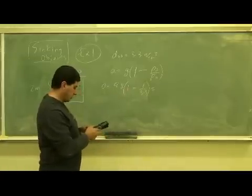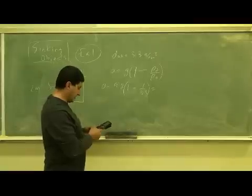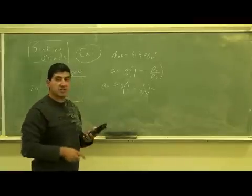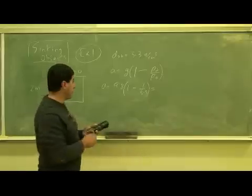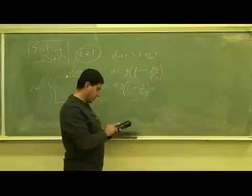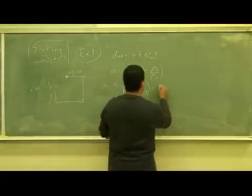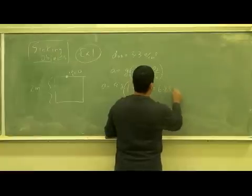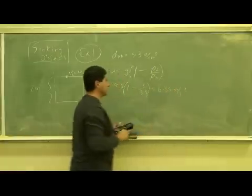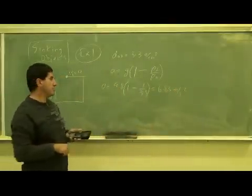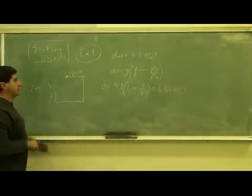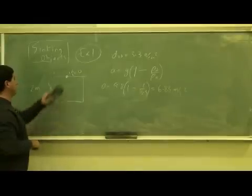So its new acceleration is 1 minus 1 divided by 3.3. Its acceleration is 70% roughly of that of gravity times 9.8, 6.83 meters per second squared. It accelerates at 6.83 meters per second squared, and then you can solve any kind of kinematics problem with that.